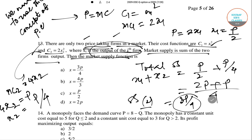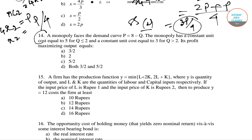Now moving to question number 14. A monopoly faces a demand curve P equals 8 minus Q. The monopoly has a constant unit cost equal to 5, so MC equals 5 for Q less than or equal to 2. But for Q greater than 2, the cost equals 3. Then what is the profit maximizing output?